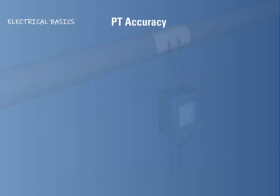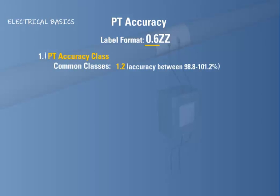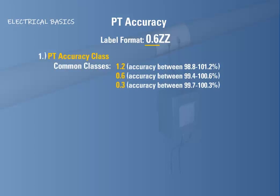The accuracy of a PT's operation is specified in the displayed label format. The first item in the label indicates the accuracy class of the PT. The three common accuracy classes are: 1.2, indicating PT accuracy between 98.8 and 101.2%; 0.6, indicating PT accuracy between 99.4 and 100.6%; and 0.3, indicating PT accuracy between 99.7 and 100.3%.